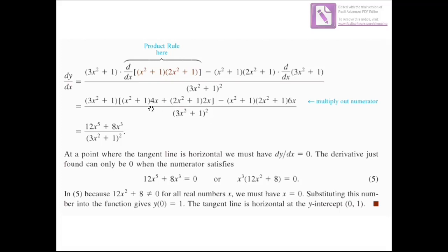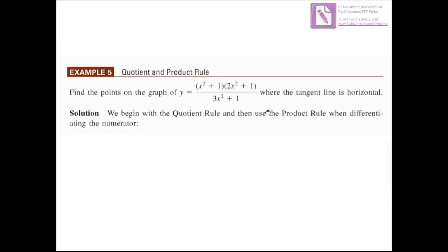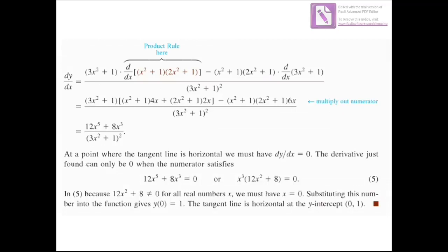We simplify by expanding: (x² + 1)(4x) + (2x² + 1)(2x), then multiply by (3x² + 1), minus (x² + 1)(2x² + 1) times 6x. After full simplification, the numerator becomes 12x⁵ + 8x³, divided by (3x² + 1) squared. Now we have the derivative. To find where the tangent is horizontal, we set dy/dx = 0.